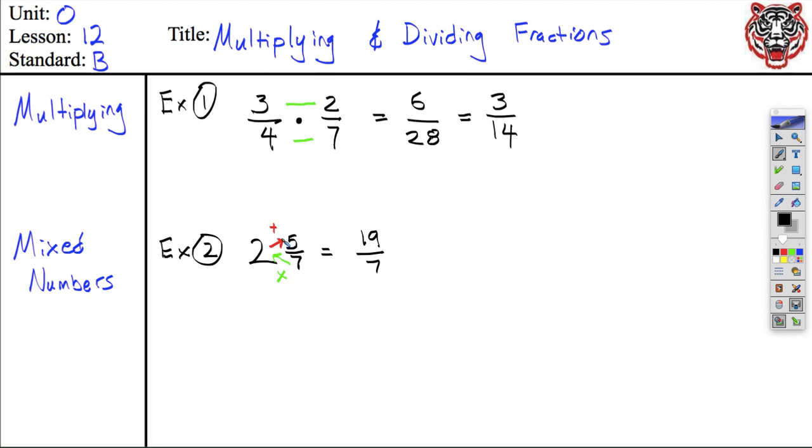Whenever I give you a mixed number on Khan Academy, first turn it to an improper fraction and then do the operation. So in Example 3, let's try 1 and 1 third times 2 and 3 fourths. If you think you know how to do this, go ahead of me in the notes. If you are a little bit unsure, think about this for 30 seconds and then I'll catch up with you. Everyone should be thinking or doing work right now.